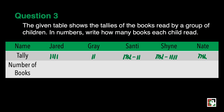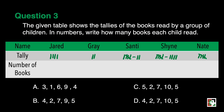Third question: the given table shows the tallies of books read by a group of children. In numbers, write how many books each child read. A. 3, 1, 6, 9, and 4. B. 4, 2, 7, 9, and 5. C. 5, 2, 7, 10, and 5. And last, D. 4, 2, 7, 10, and 5.